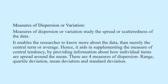Measures of Dispersion or Variation: Measures of dispersion or variation study the spread or scatteredness of the data. It enables the researcher to know more about the data than merely the central term or average. Hence, it aids in supplementing the measure of central tendency by providing information about how individual items are spread around the mean. There are four measures of dispersion: range, quartile deviation, mean deviation, and standard deviation.